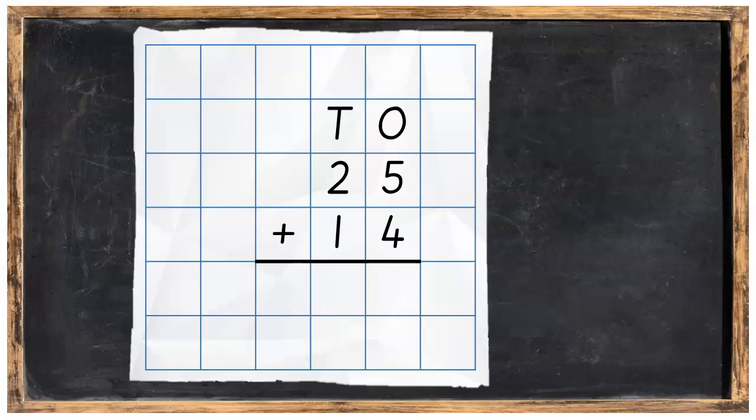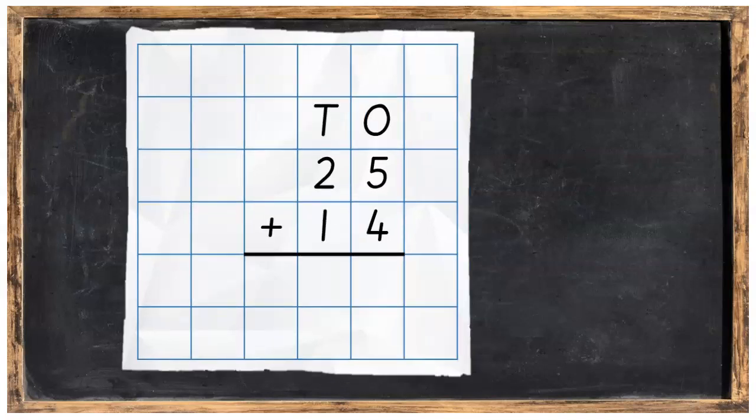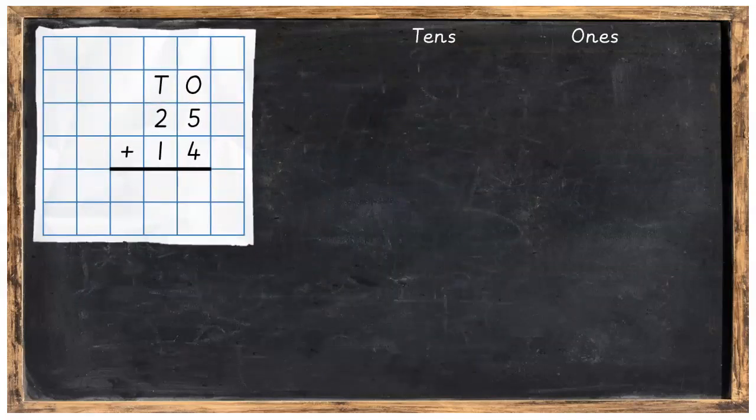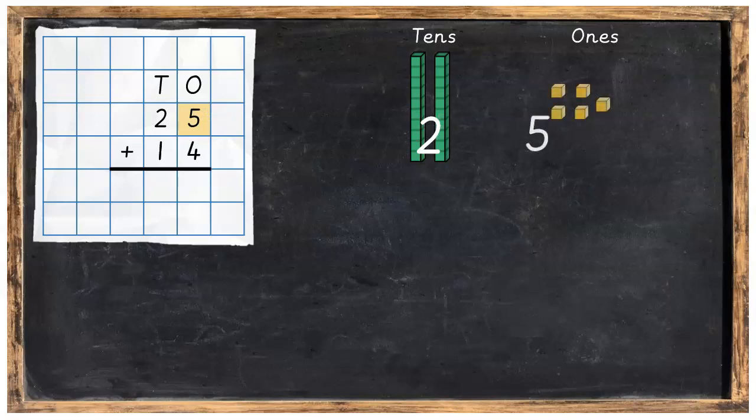How are we going to do this sum? Well let's start off by laying out our Dienes blocks into tens and ones. So we're going to have two tens and then on the other side we're going to have five ones. Then underneath that we're going to have one ten just like this and then four ones underneath the five ones.